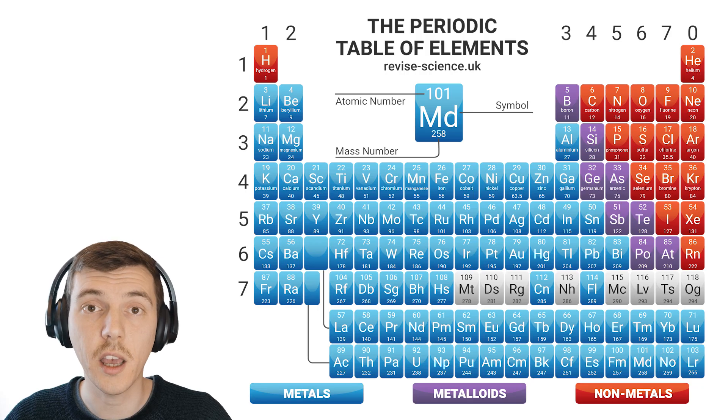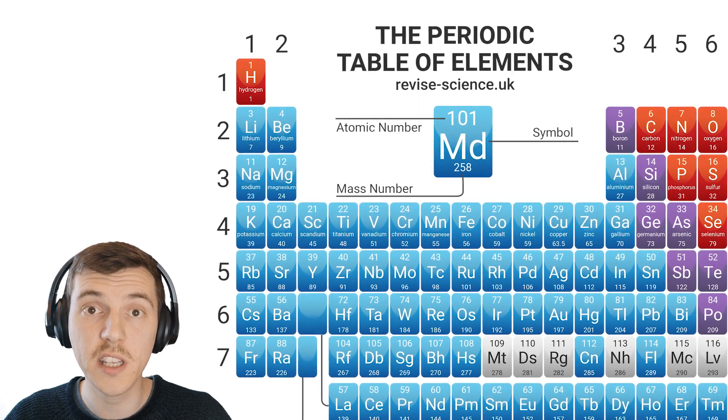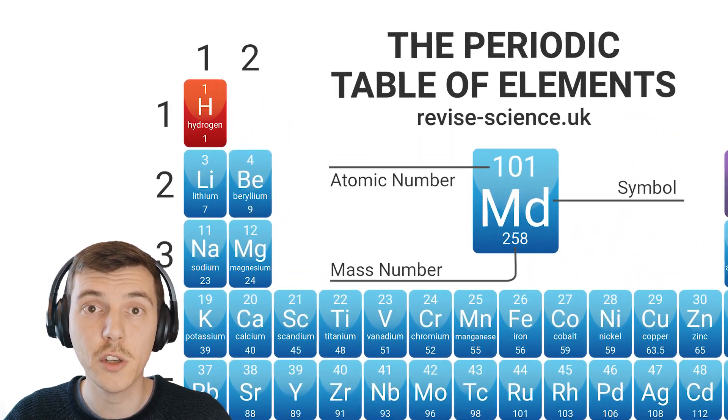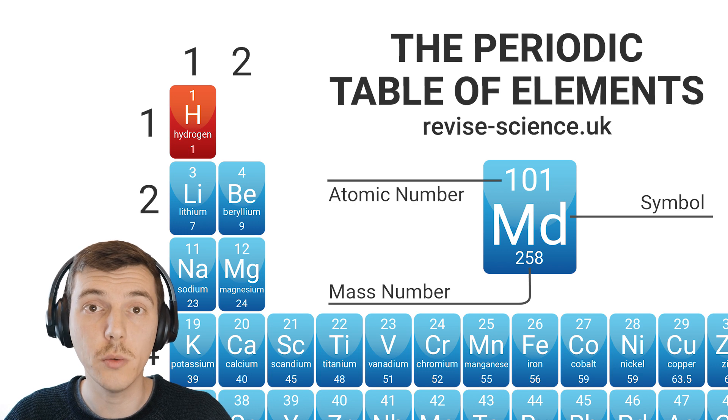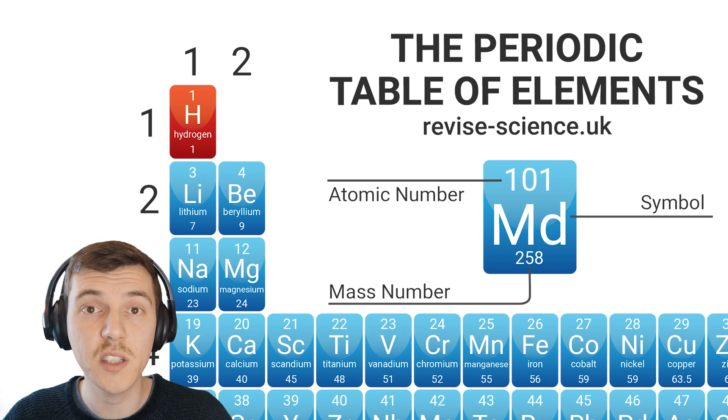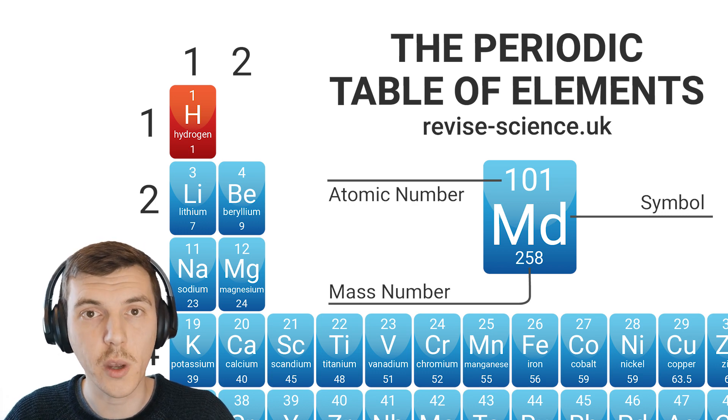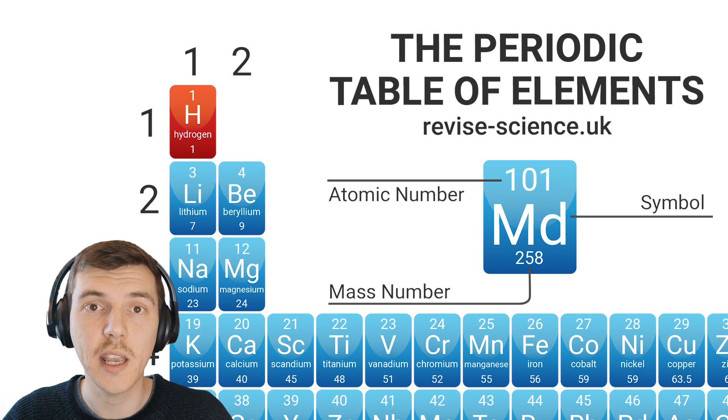As I said earlier, every element can be found on the periodic table. On the periodic table, you will find lots of useful information, but one of the most important is the chemical symbol. Each element has its own symbol made up of a one or two-letter code. The first letter is always a capital letter, so that we can identify when a new element is starting in things like symbol equations. We'll learn about those in a later video.